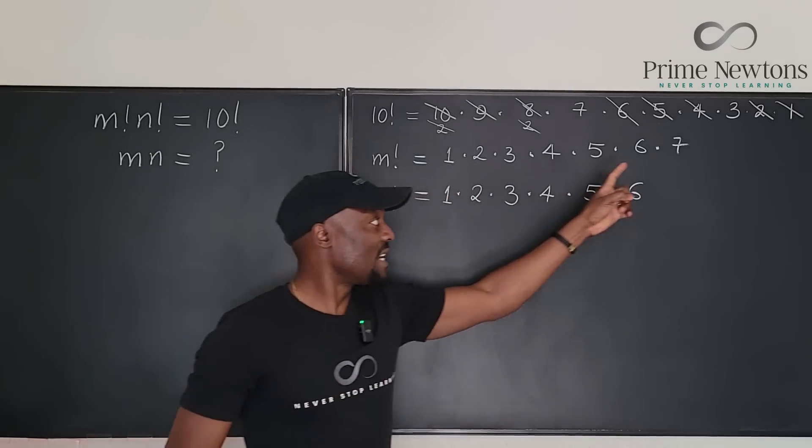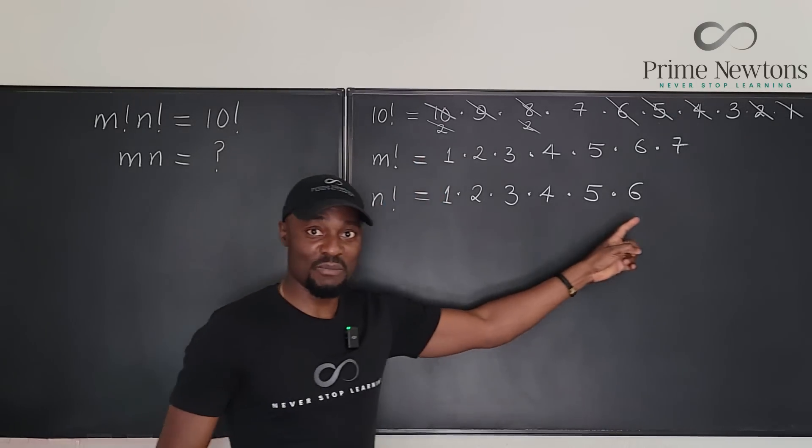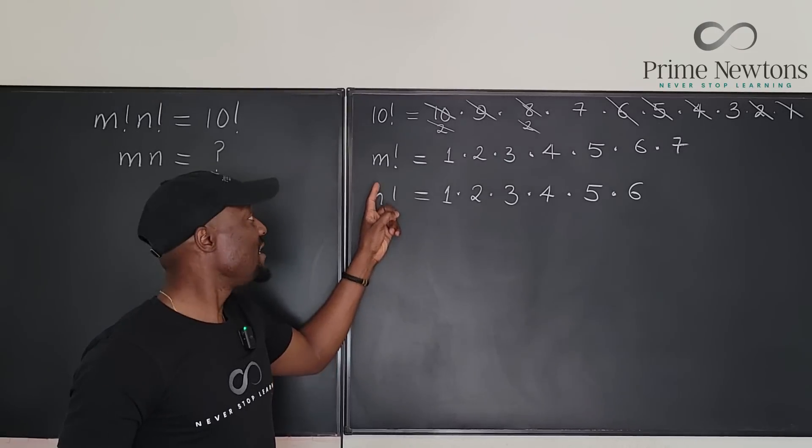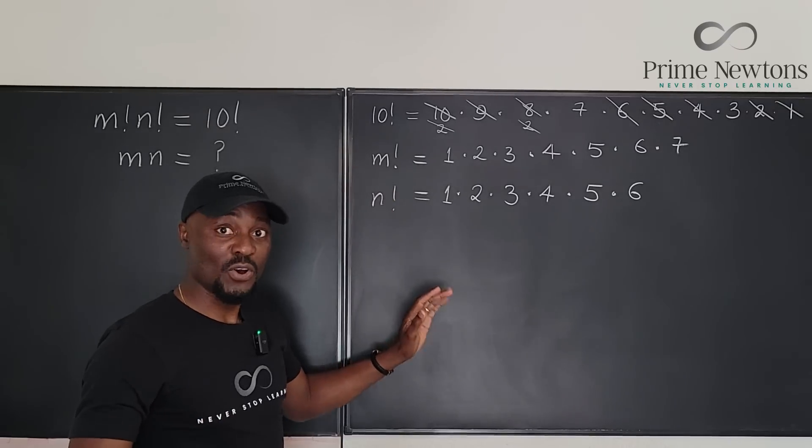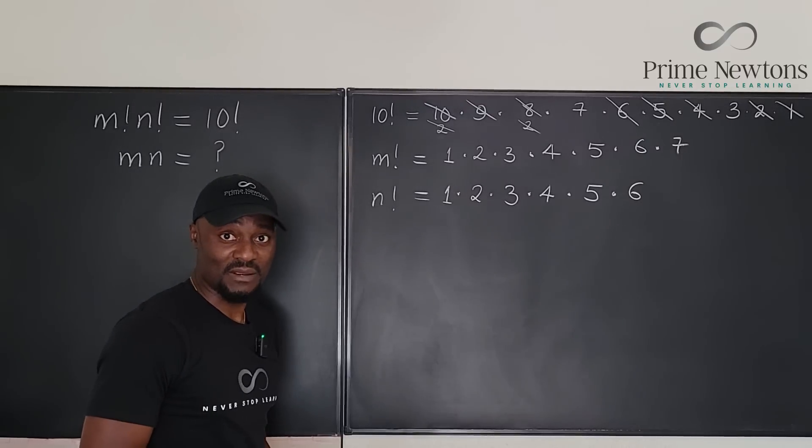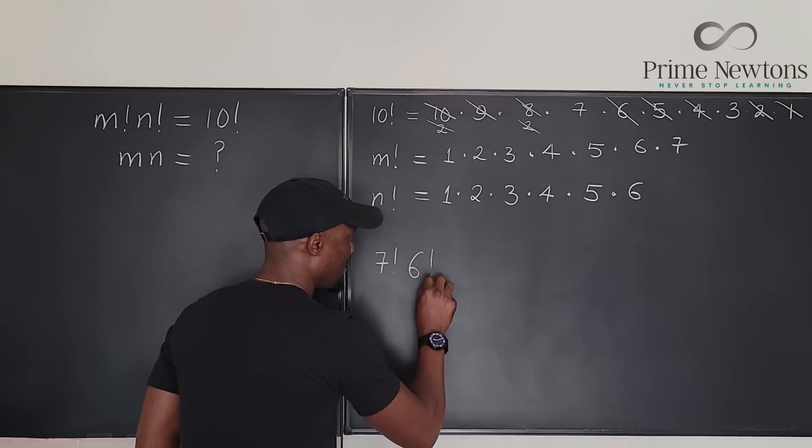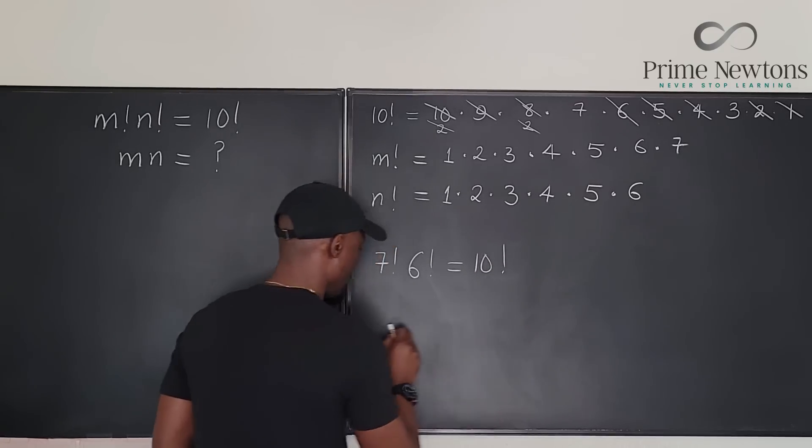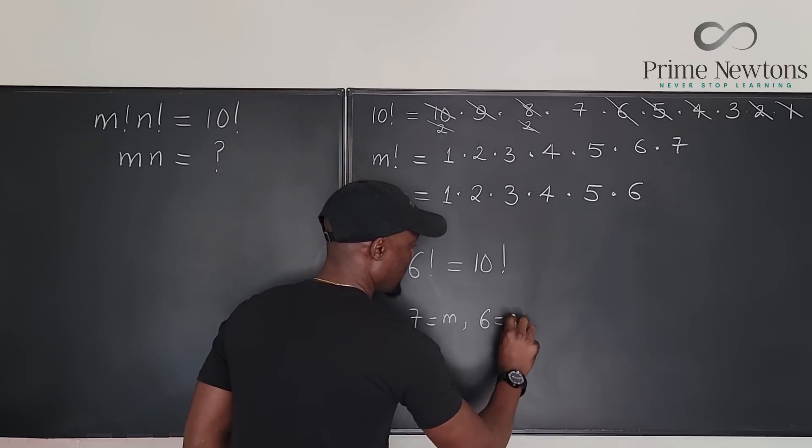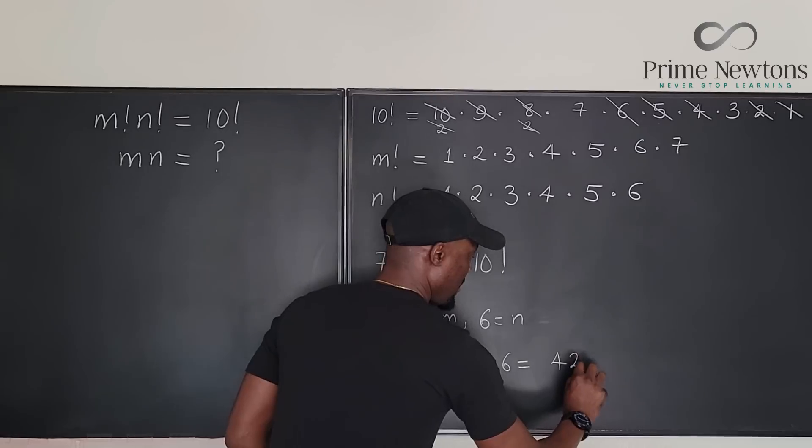So because I built from 1 up to that number, this number is 7 factorial. That means that my n must be 6 and my m must be 7, and that's it. So m n must be 42. I could say that 7 factorial times 6 factorial is equal to 10 factorial, which implies 7 equals m and 6 equals n, and then m n equals 7 times 6, which is equal to 42.